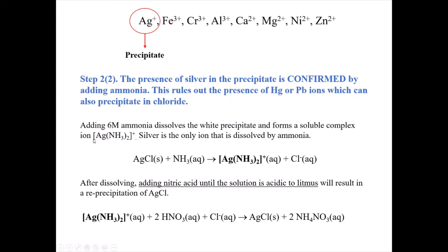The complex forms because ammonia donates its electrons to the silver ion via Lewis acid-base chemistry, making silver soluble as the silver-ammonia complex with actual chemical bonds between Ag+ and NH3. This tells us we definitely have silver chloride. Then we add nitric acid until the solution is acidic, which reacts with the ammonia and removes it, causing silver chloride to re-precipitate.